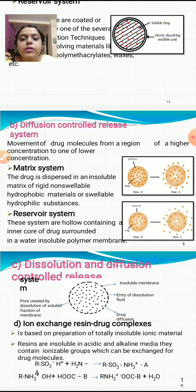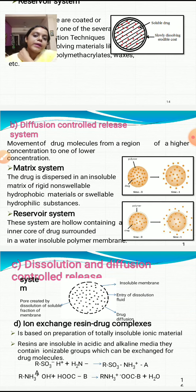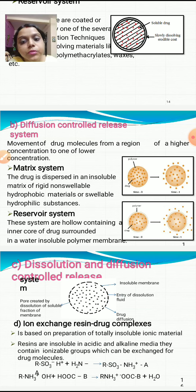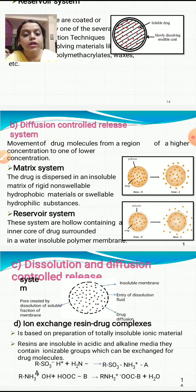The diffusion controlled release system has two types: matrix system and reservoir system. In the matrix system, the drug is dispersed in an insoluble matrix of rigid non-swellable hydrophobic materials or swellable hydrophilic substances. In the reservoir system, these are hollow systems containing an inner core of drug surrounded by a water-insoluble polymer membrane.